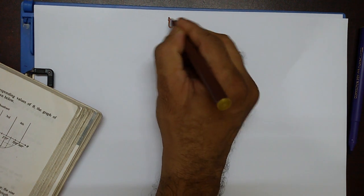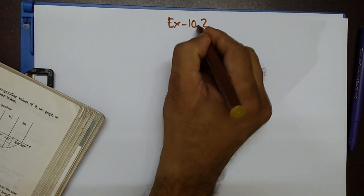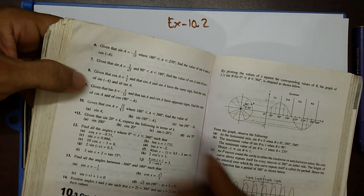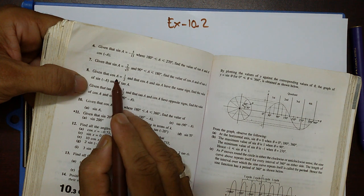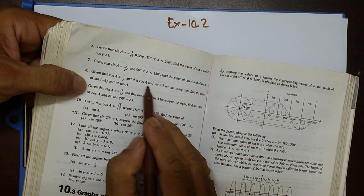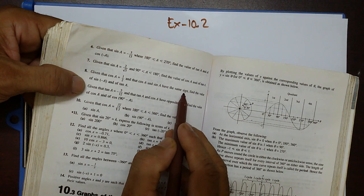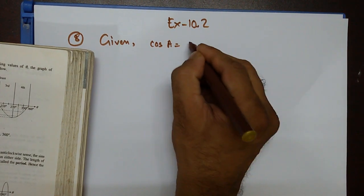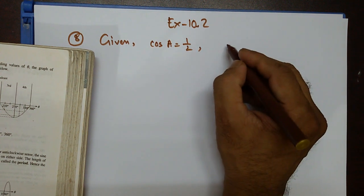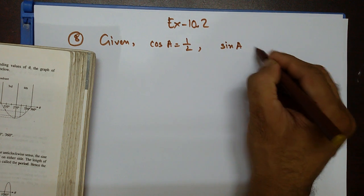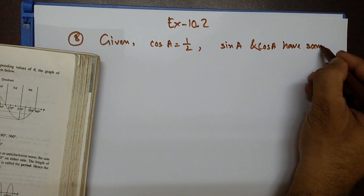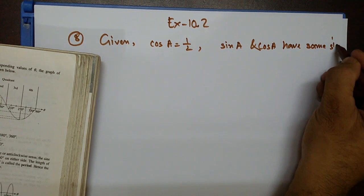Question number eight says — given that cos a equals half, and that cos a and sine a have the same sign.